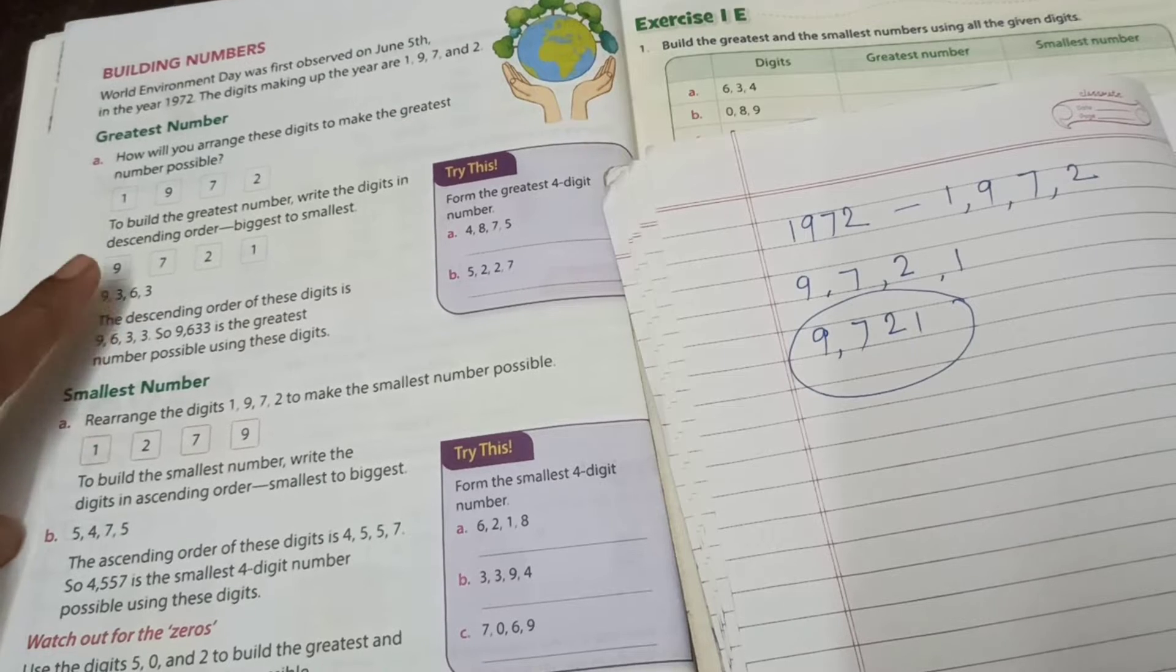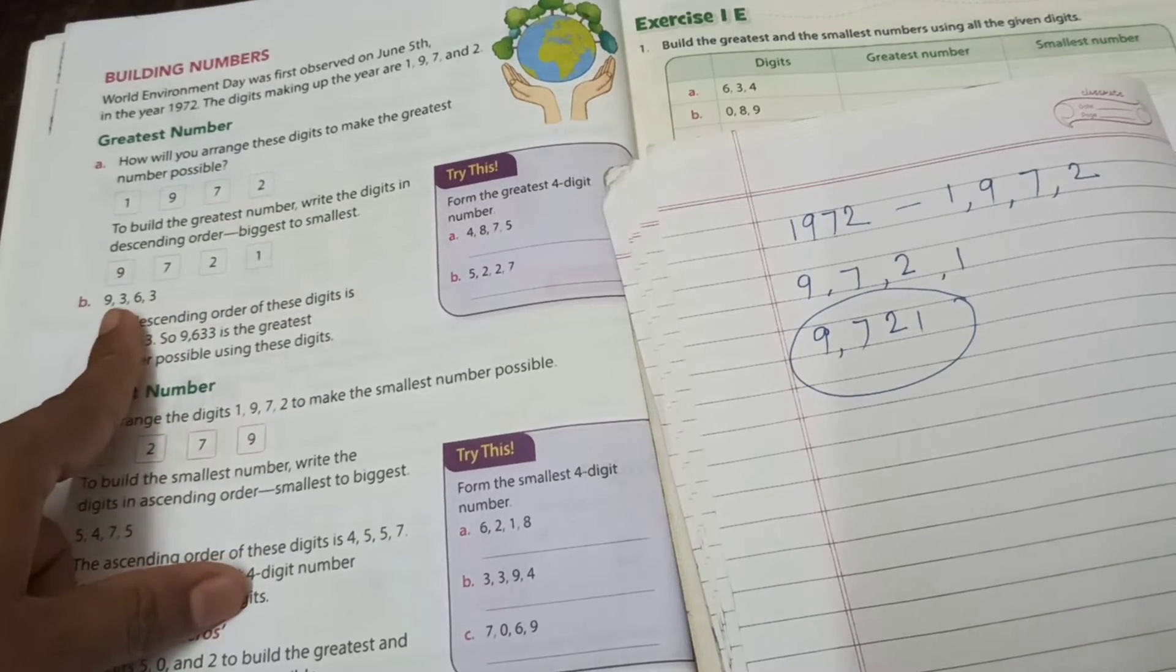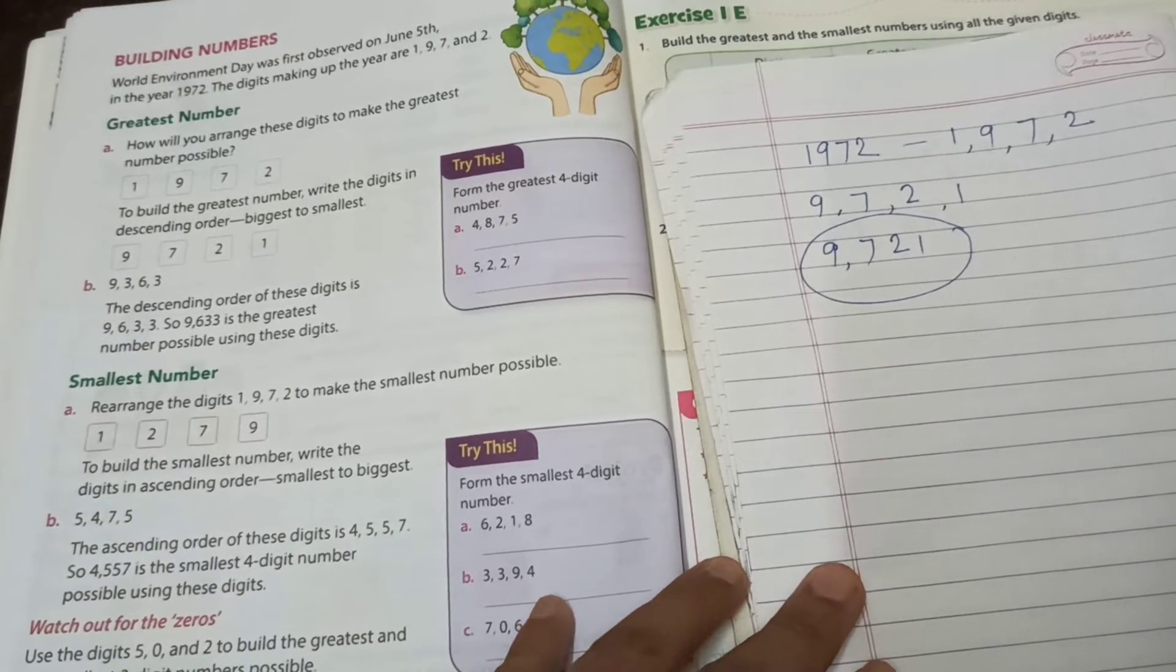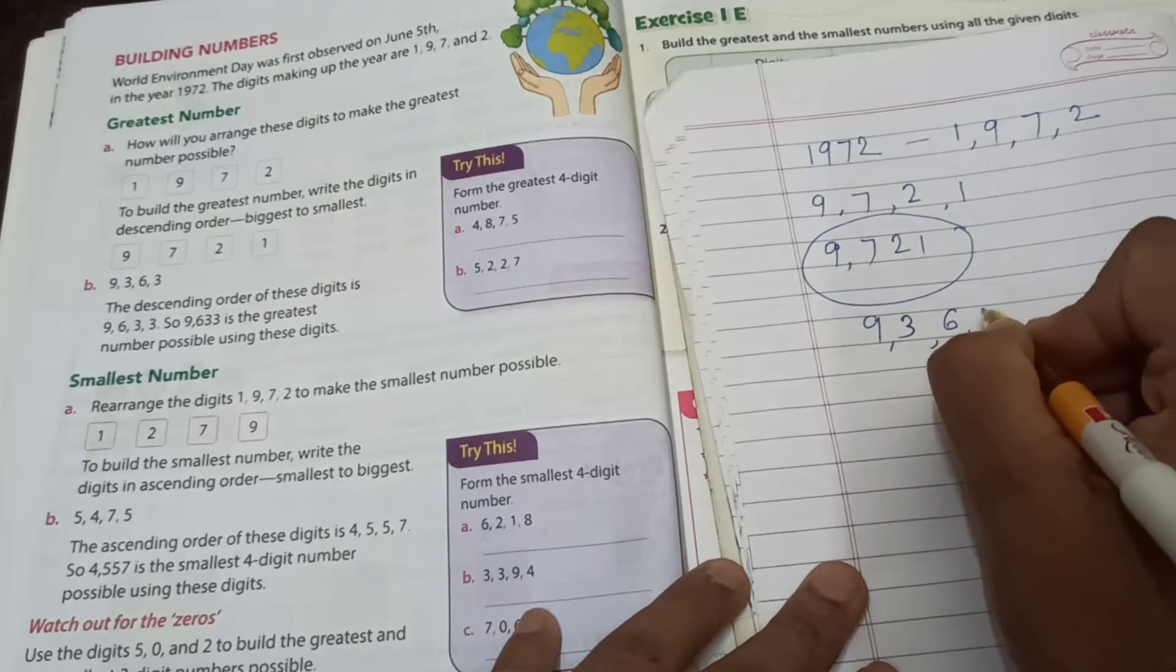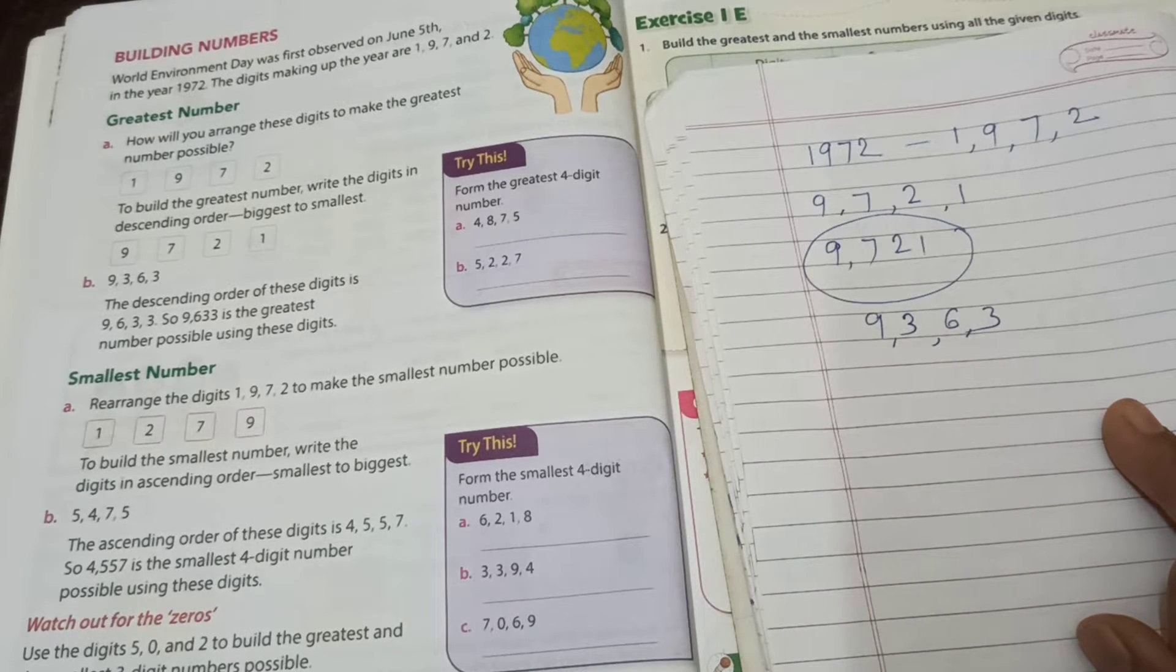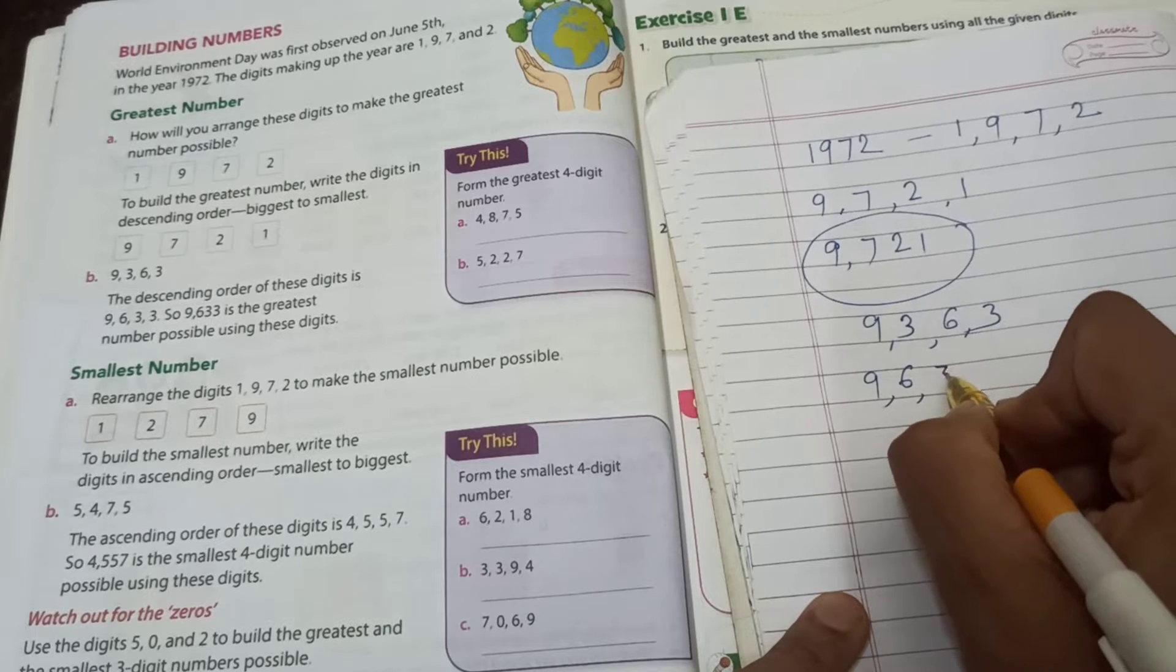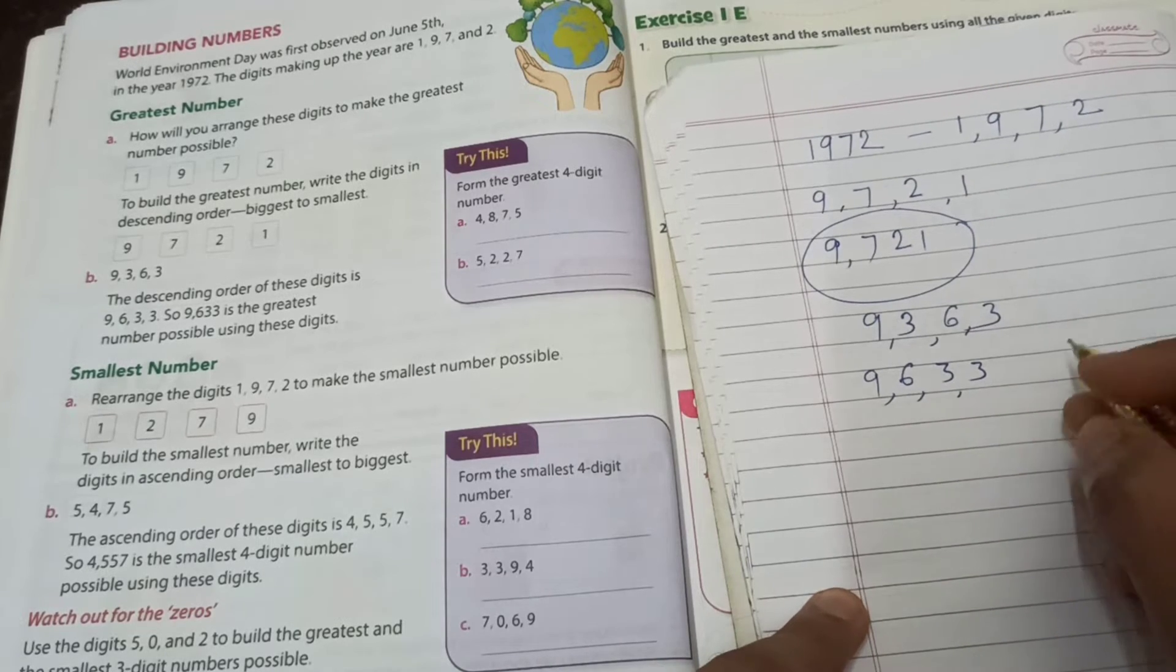See, textbook given here. 9, 3, 6, 3. This one number. And they are saying, the descending order of these digits are how? Descending means greatest to smallest. Then this one number 9, 3, 6, 3. How we arrange? Because the descending order of these digits is 9, 6, and 3, 3. Both are same number. So 9633 is the greatest number.